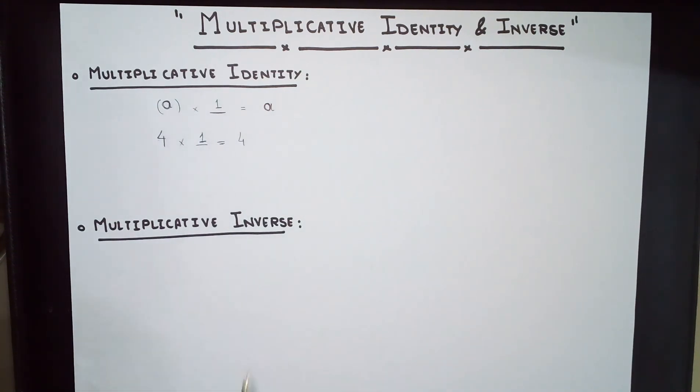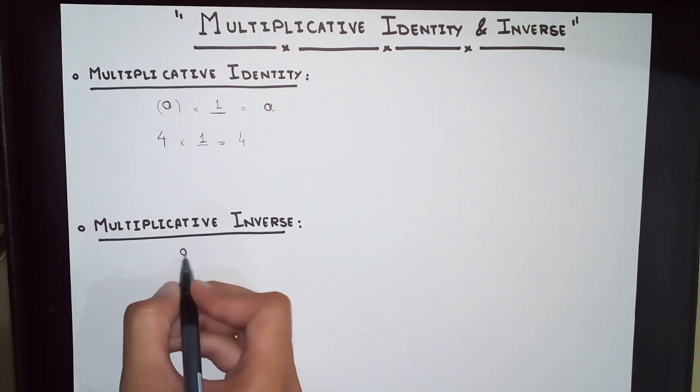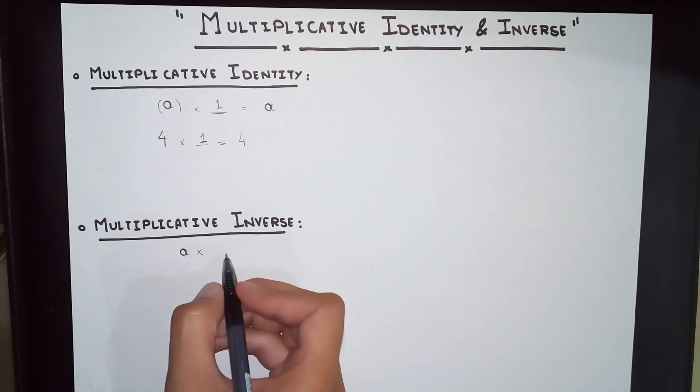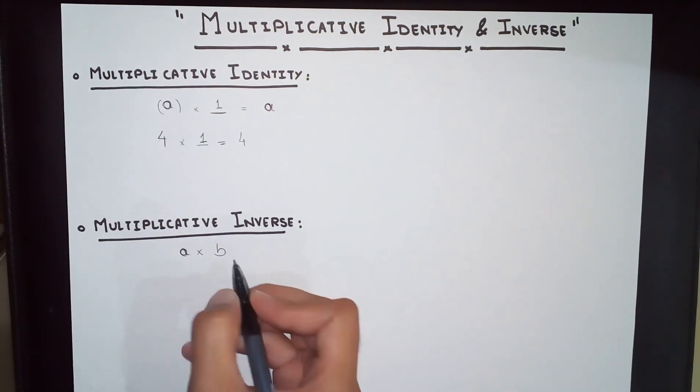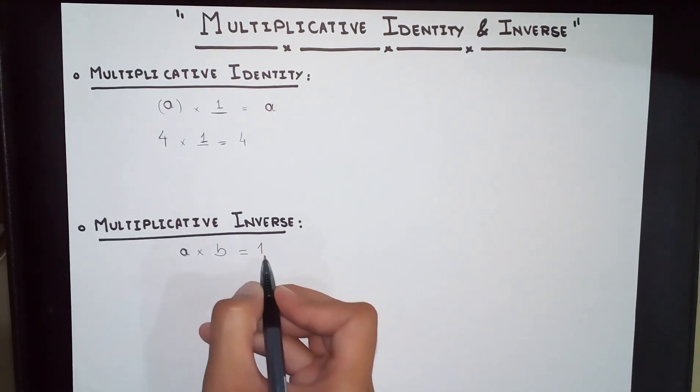Multiplicative inverse: any number which is the opposite of the first one, both of them give the number one. Both numbers will be called multiplicative inverses of each other. If you have A and you multiply that with B, at the end you get 1.